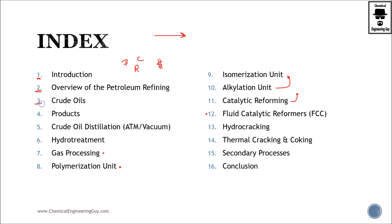Then we continue with section number three, which is crude oils. As the name implies, we're going to cover crude oils in terms of physical and chemical properties. This is very important because it's going to be dictating our refinery. Depending on your crude oil, you're going to have your refinery. We're going to look at viscosity, sulfur content, where we get them from, typical aspects, and why we want to avoid high sulfur content.